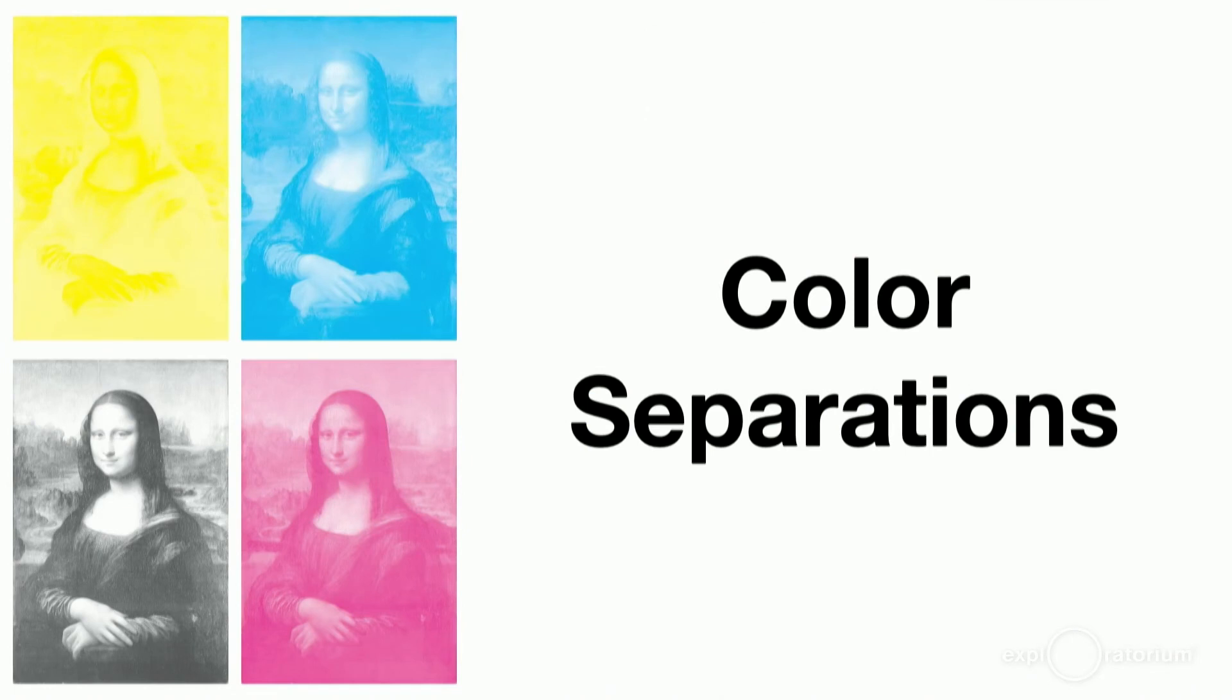Printing a color photo means starting off with something called a color separation. Here you see the Mona Lisa broken into the cyan, magenta, and yellow colors of the original. I'll explain the black color separation in a moment. The paper gets printed four times with the subtractive primaries to make a full color print.